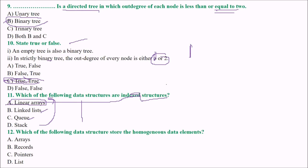Which of the following data structures store homogeneous data elements? The answer is arrays — they contain homogeneous data elements. Records also store homogeneous data elements, but due to the conventional understanding, we take the answer as A. Records are also similar, but arrays are the primary answer.